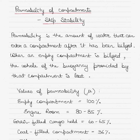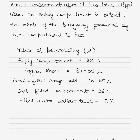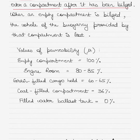I'll discuss the theory first and then take up an example. Permeability is the amount of water that can enter a compartment after it has been bilged. On a ship, for example, if there is a hole in the hull due to a collision or structural damage, and water starts to come into the compartment — especially if it is below the waterline — that is called bilging. Permeability is the amount of water that can enter that compartment after it has been bilged. The compartment could be a tank, depending on the kind of ship you're sailing on.